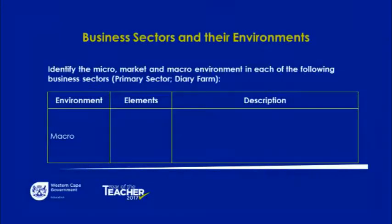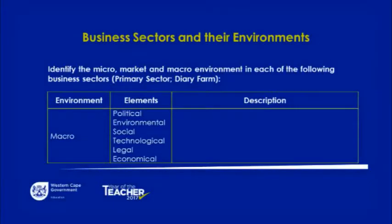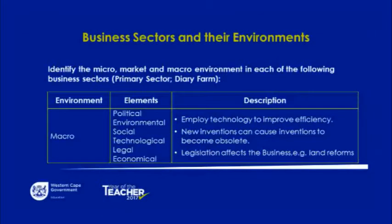Now we are going to identify the macro environment using the same example of the dairy farm. In the macro environment, management has no control. The elements are political, environmental, social, technological, legal, and economical. The description in particular is that management may employ or use technology to improve efficiency, and may also use new inventions.